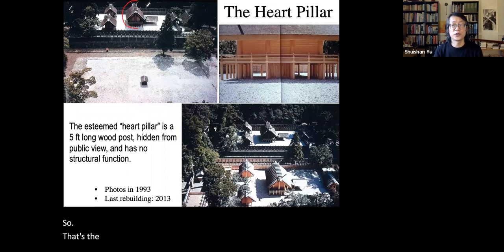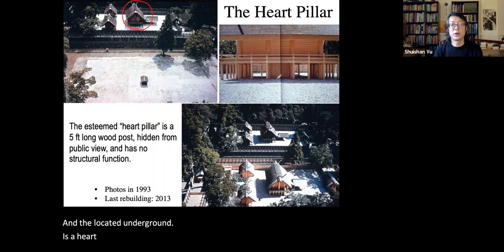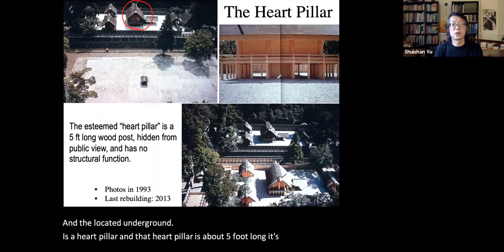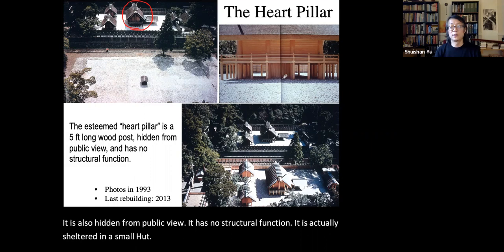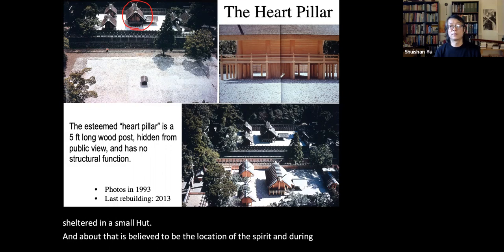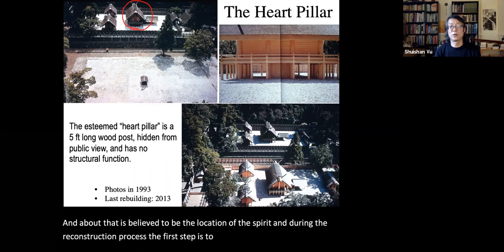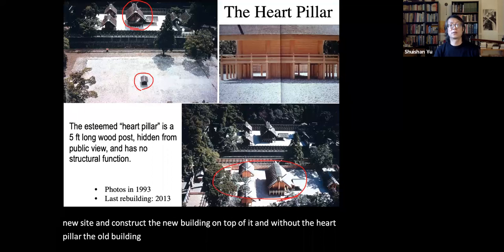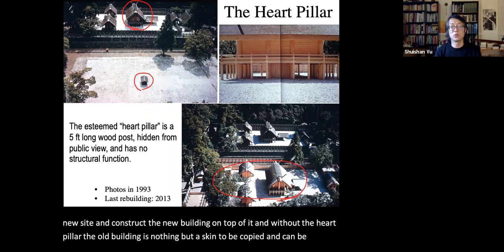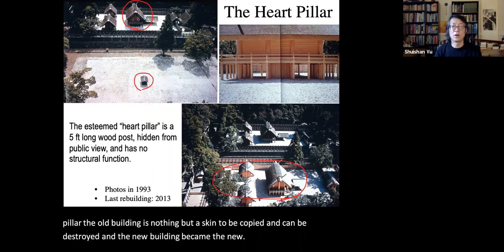The building where the treasures are kept is elevated from the ground. Located on the ground is a heart pillar — about five feet long — which is not structural and is hidden from public view. It is sheltered in a small hut and is believed to be the location of the spirit. During reconstruction, the first step is to relocate the heart pillar to the new site and construct the new building on top of it. Without the heart pillar, the old building is nothing but a shell to be copied and destroyed.